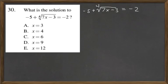What is the solution to negative 5 plus the 4th root of 7x minus 3 equals negative 2? I've rewritten it over here, and it's this 4th root that gives a lot of people problems.